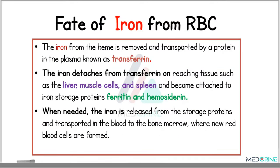The iron from the hemoglobin is removed and transported by the protein in the plasma known as transferrin. This iron detaches from transferrin on reaching the tissue — for example the liver, muscle cells, and the spleen — and becomes attached to the iron storage proteins known as ferritin and hemosiderin. When this iron is needed, it is released from the storage proteins and transported in the blood to the bone marrow, where new cells are formed.